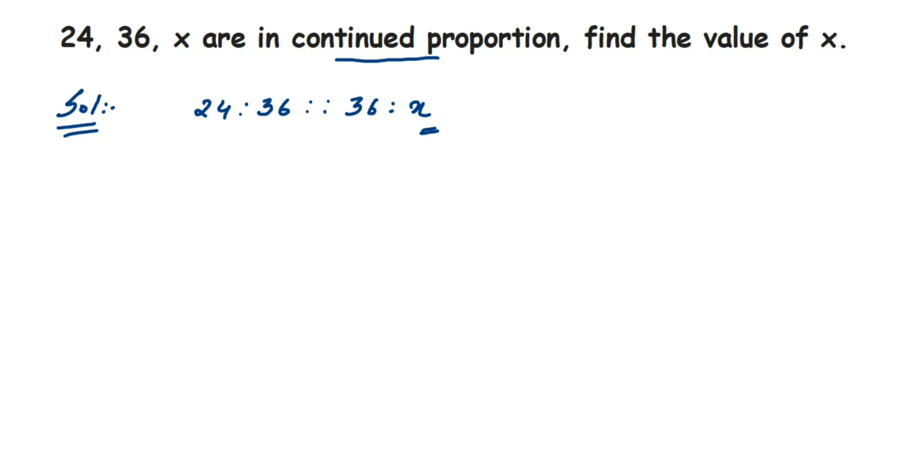How to do this? You have learned that if the given ratios are in proportion, then the product of extremes will be equal to product of means. Now what are the extremes and what are the means? The numbers which are on the extreme side, that is 24 and x, they are on the extreme side in this given ratio.